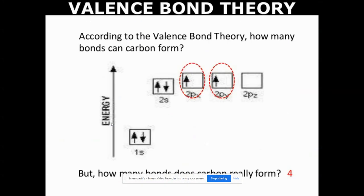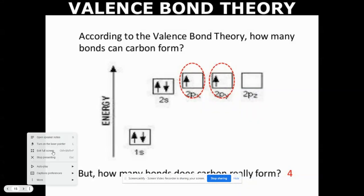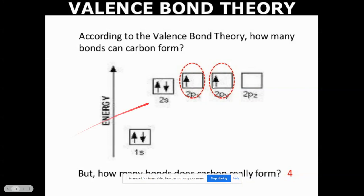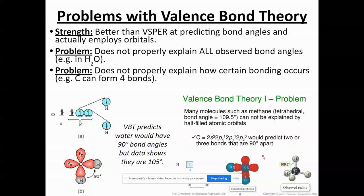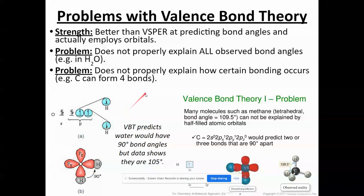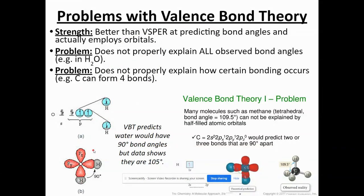In the previous video, we saw that not all bonding can be explained properly with valence bond theory alone. For example, carbon has two single electrons, which doesn't explain why it can form four bonds. We also saw that the shape of many molecules and bond angles don't quite match up experimentally — especially the case for water.